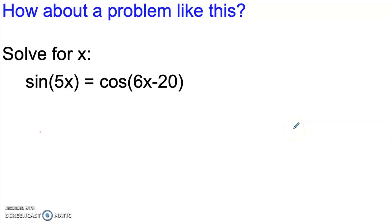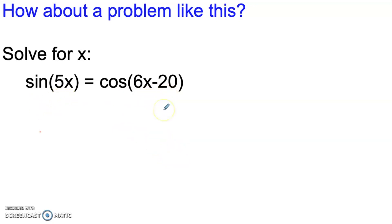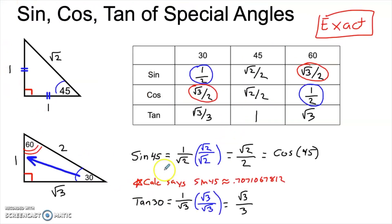Let's shift gears and look at a problem: solve for x given that the sine of 5x equals the cosine of 6x minus 20. Many students would have the inclination to set 5x equal to 6x minus 20, but that's kind of a last resort. A clue to how we can solve this problem is actually back in the chart — remember that pattern we said we'd come back to? Here is where we want to think about that.